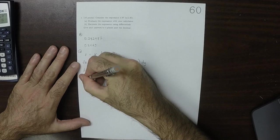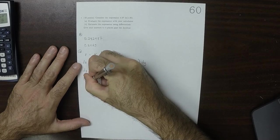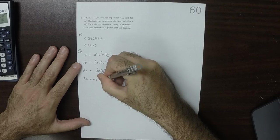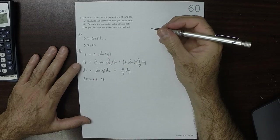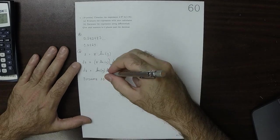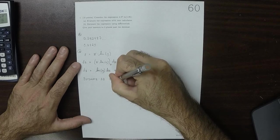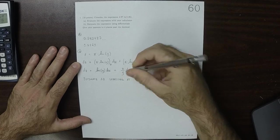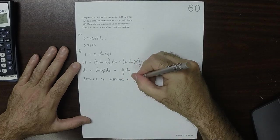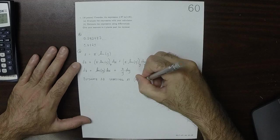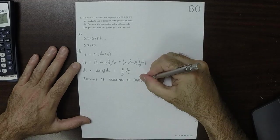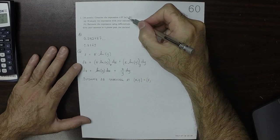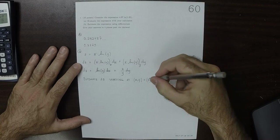We'll estimate delta z starting at x, y is 5 for x and 1 for y.